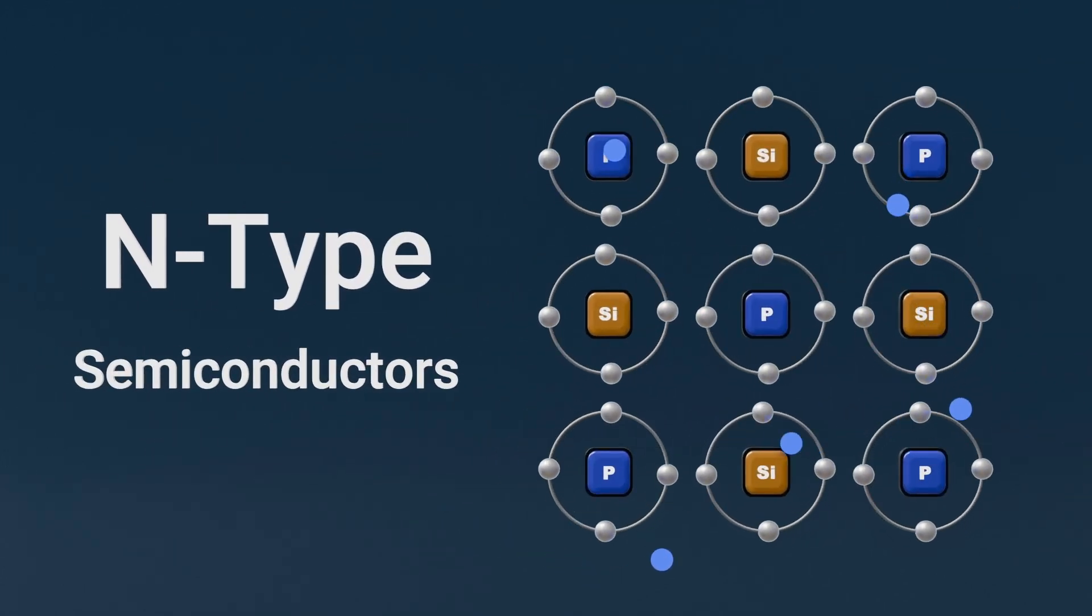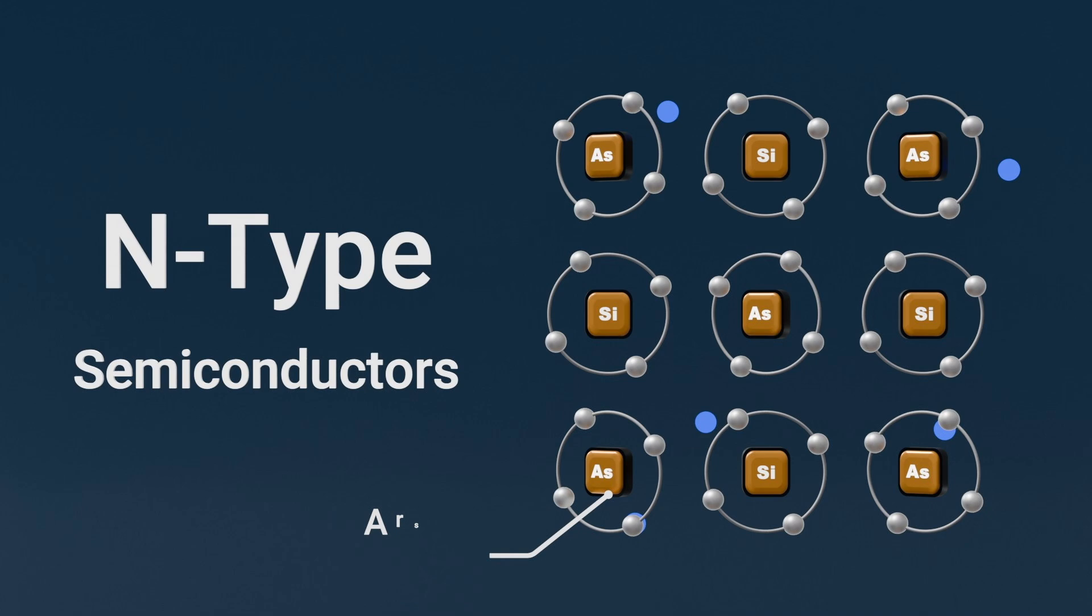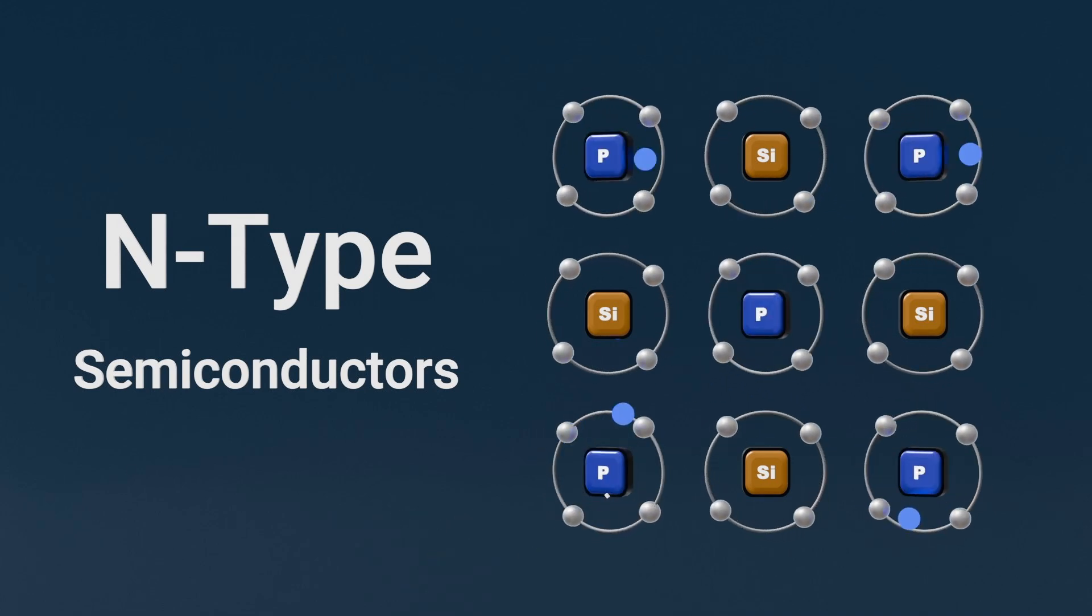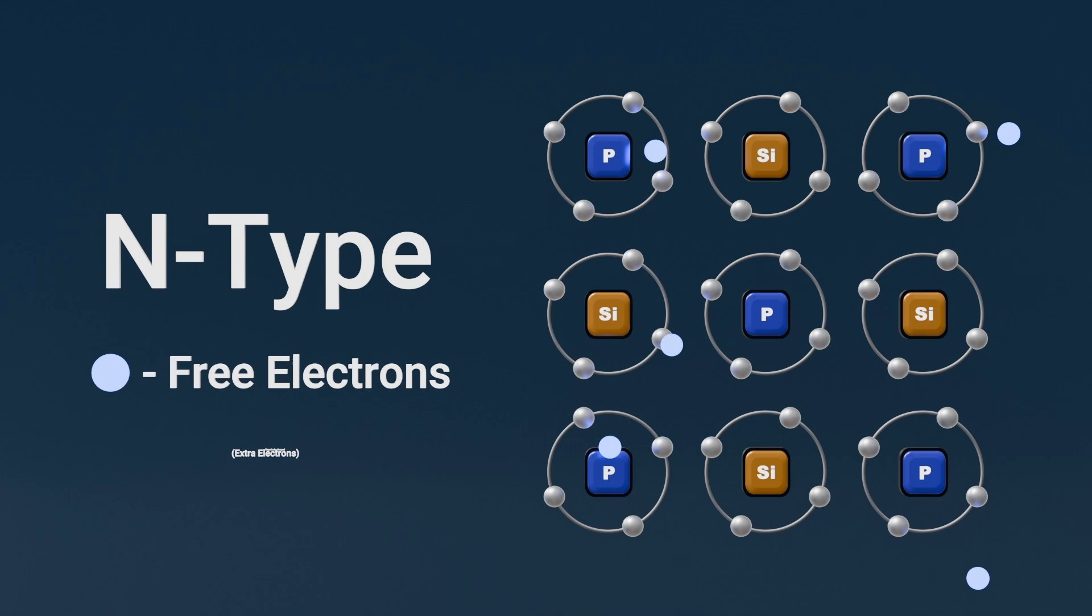There are two main types of doped semiconductors. Number one, n-type semiconductors. They are doped with elements like phosphorus or arsenic, which have extra electrons. These extra electrons move freely, making the material negatively charged.